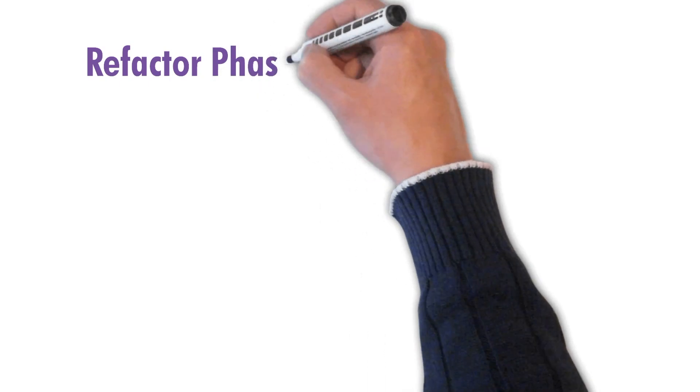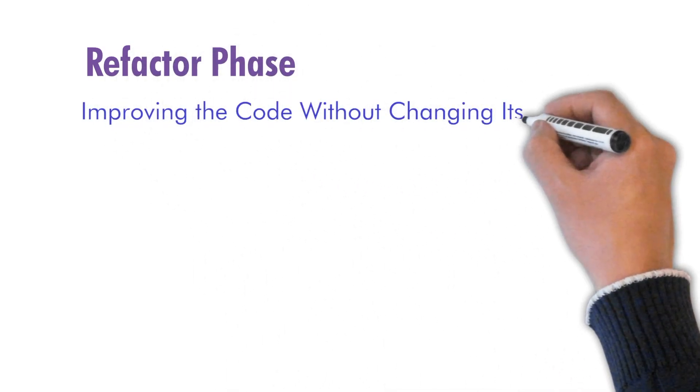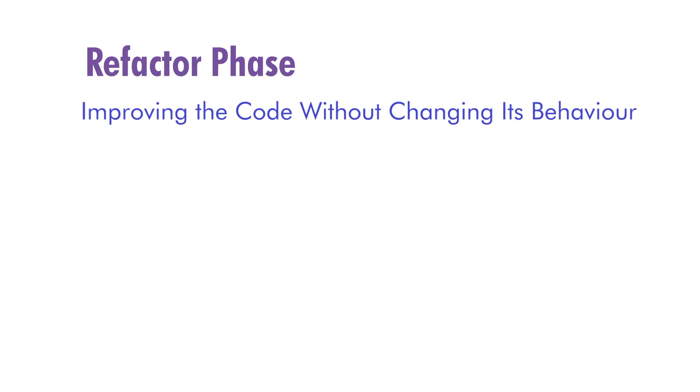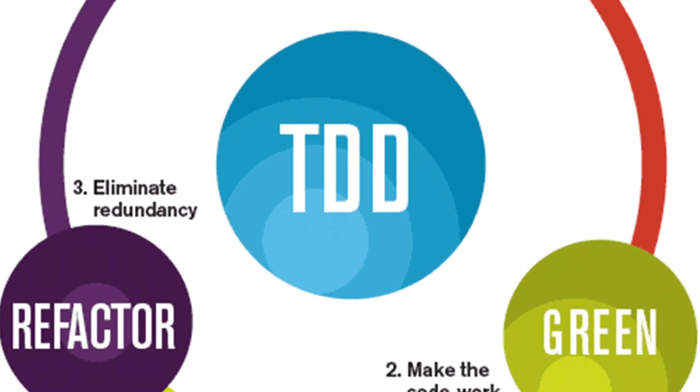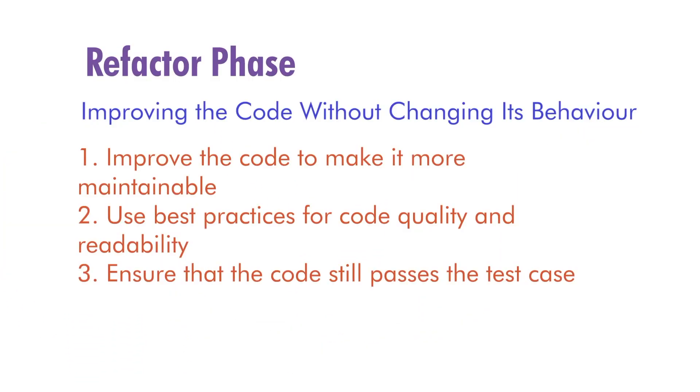The refactor phase is the third phase of the TDD cycle. In this phase, you improve the code without changing its behavior. This can include improving the code's quality, readability, and maintainability. You should use best practices for code quality and ensure that the code still passes the test case.